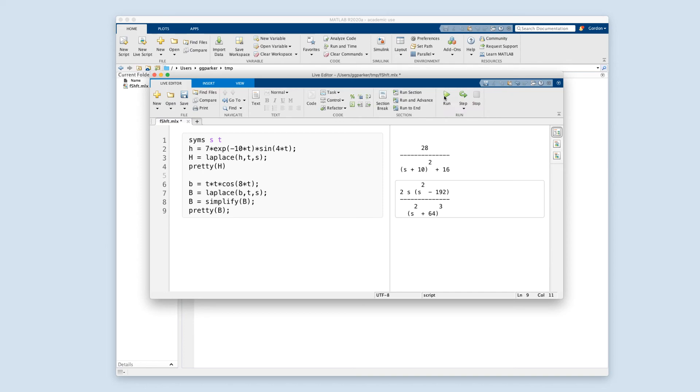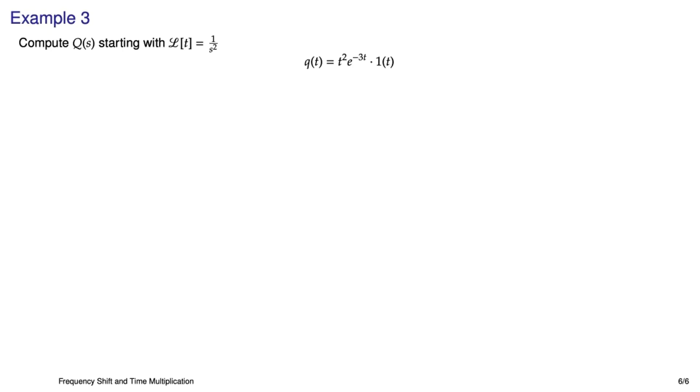So let's do one more example. So what do we have here? Q(t) is t-squared times e^(-3t), and that stinker is often in a Laplace transform table. But we have to do this problem as if the only thing we know is that the Laplace transform of a ramp, t, is equal to 1 over s².